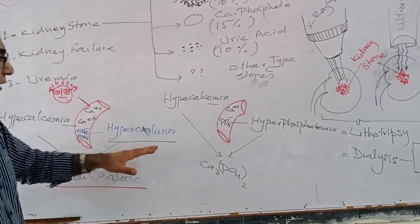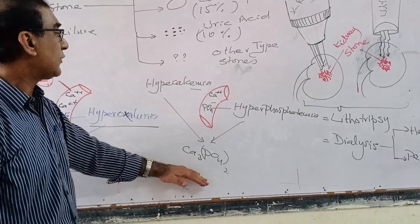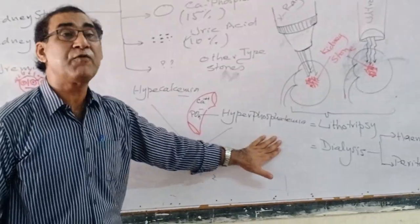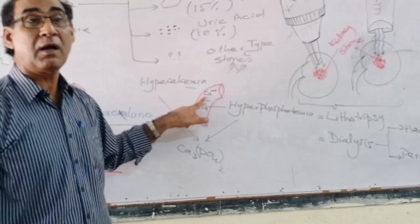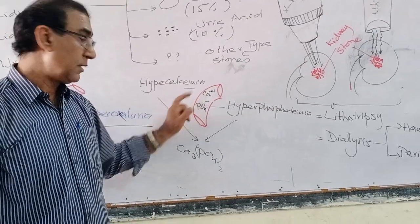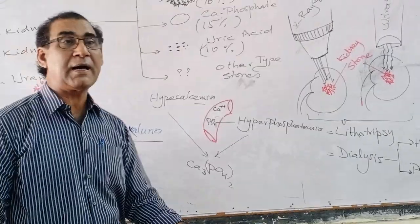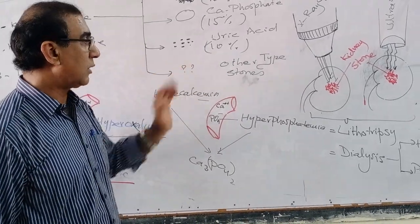The next stone is calcium phosphate. How is it formed? It is formed when there is hypercalcemia and hyperphosphatemia. There is high concentration of phosphate and high concentration of calcium in the blood. And if there is a higher amount of uric acid, then the uric acid stone is formed and others as well.